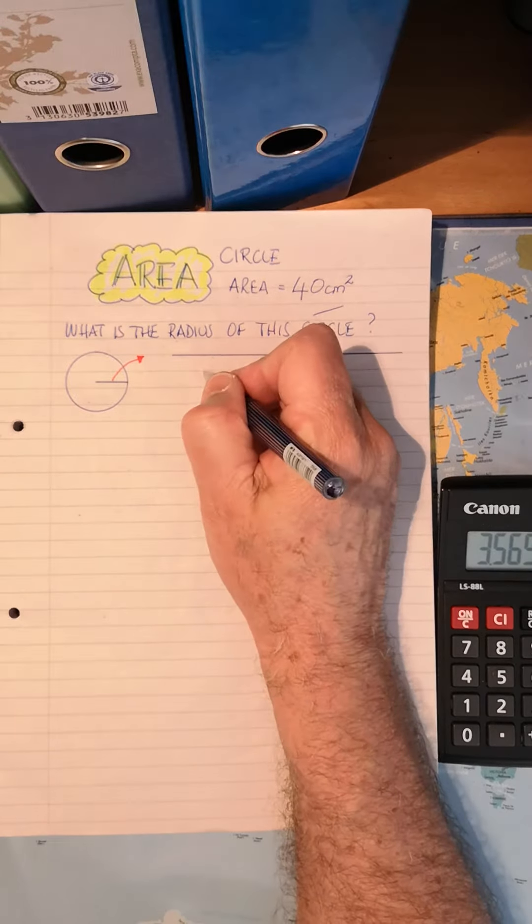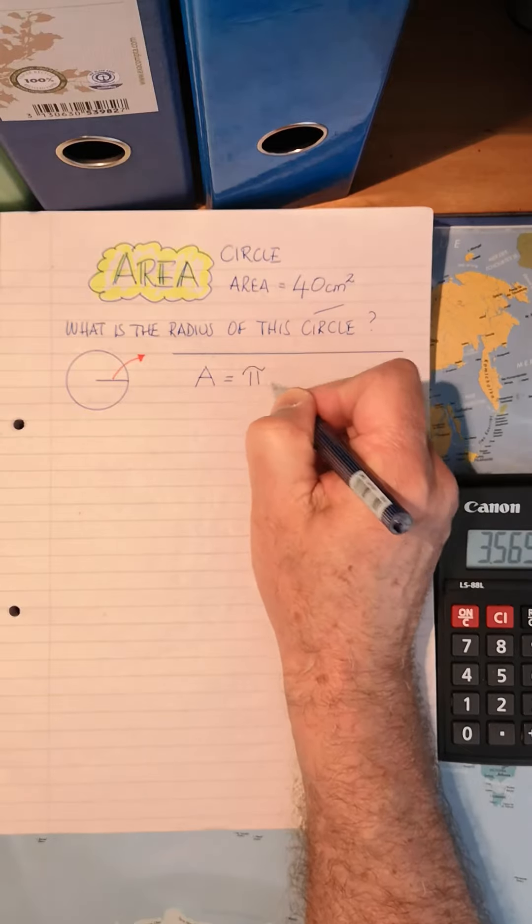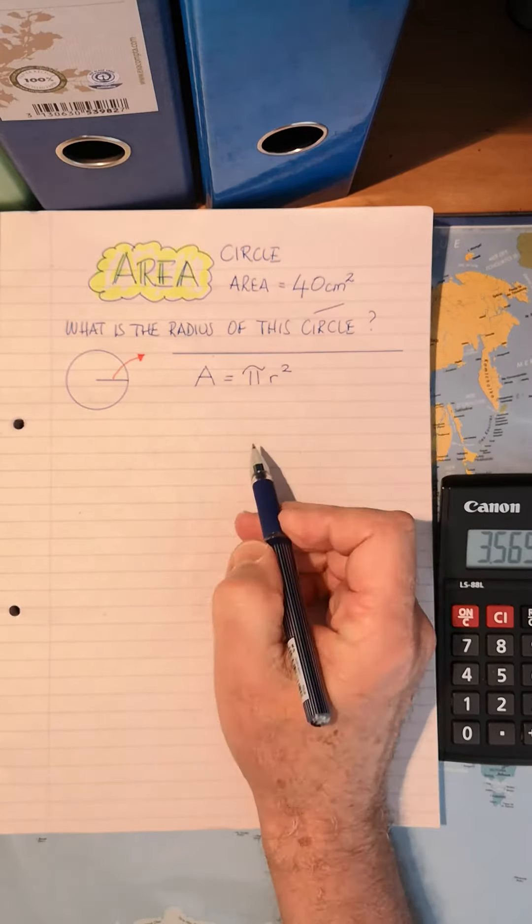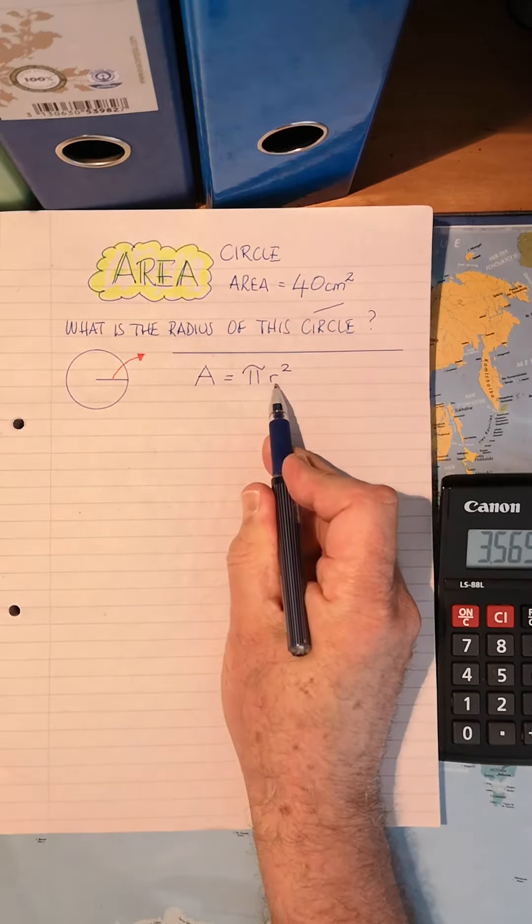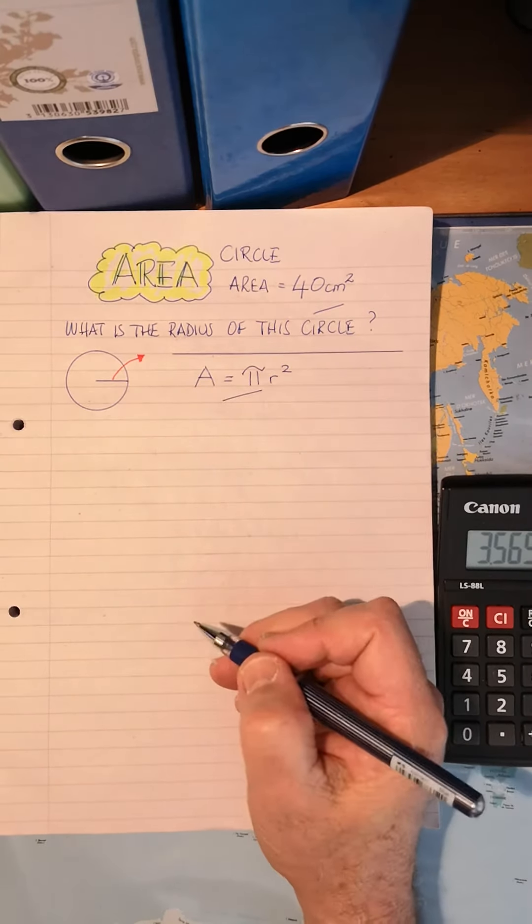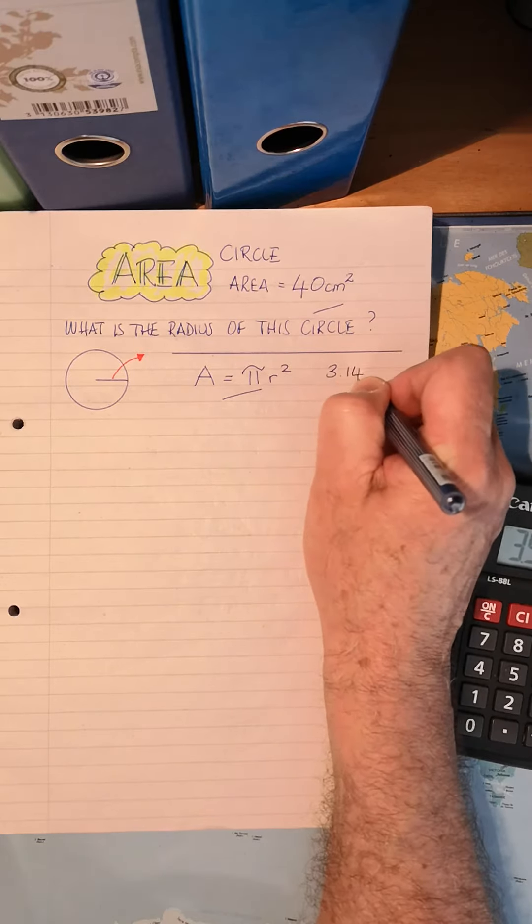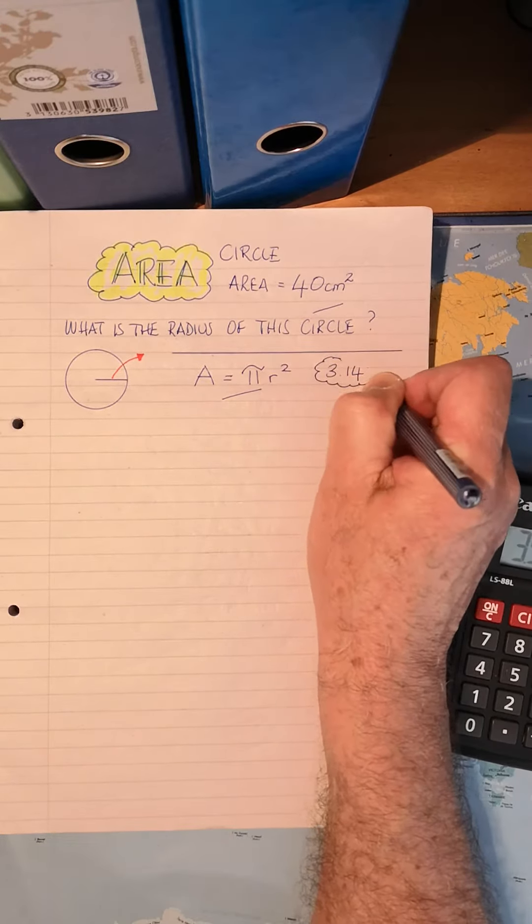Now we know that the formula for working out a circle is area equals pi r squared. Pi times radius squared. That's our normal formula we use. And again in this instance we'll use 3.14 as our pi measurement.